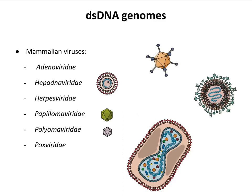Here are the viruses with double-stranded DNA genomes that we'll mainly talk about in this course. As we go through the stages of replication, and as we talk about disease, we will make reference to these. These are all viruses that infect mammals. Lots of other viruses with these genomes infect plants and bacteria and all sorts of other forms of life, but we're not going to be talking about them.